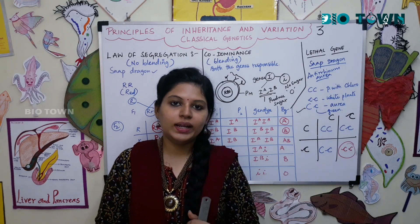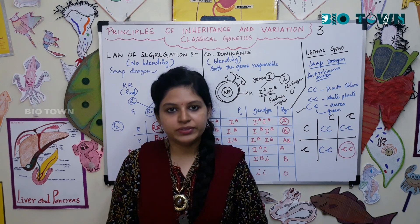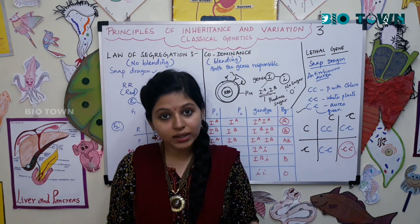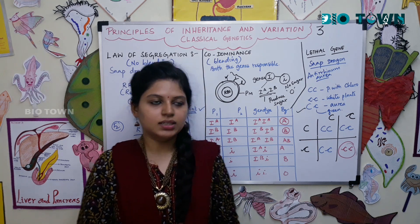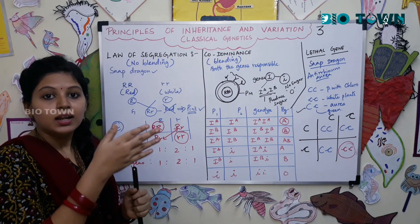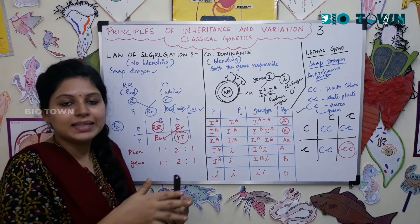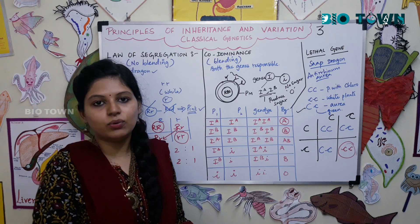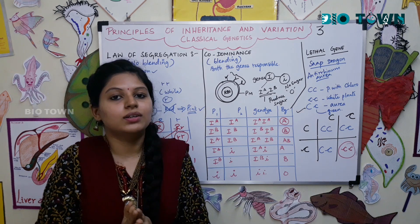Hello friends, we'll continue with the chapter. Now we'll see about the law of segregation, then we'll talk about co-dominance and lethal genes. So first we move on to the law of segregation. What do we mean by segregation? It means that you are isolating something, you are taking something apart — that is called segregation.